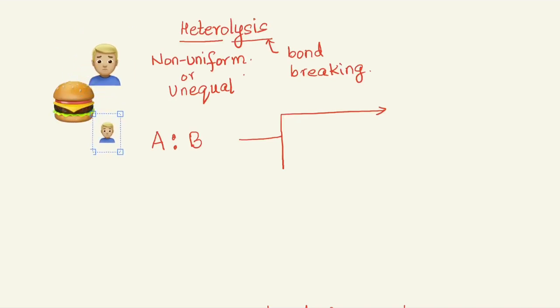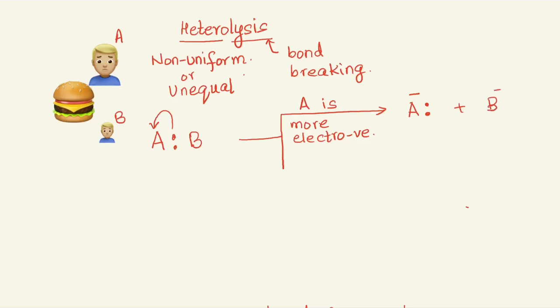Let's call the two atoms A and B. In the first case, A is stronger — A is the more electronegative atom. As a result, A takes up both the electrons. To show the movement of both electrons towards A, we use a complete curved arrow. If A is more electronegative and takes away the electrons, the formal charge it acquires is negative, and B is left with a positive charge.